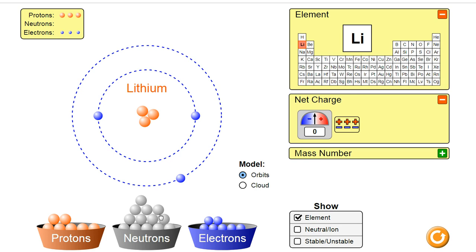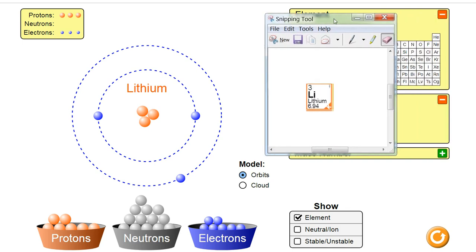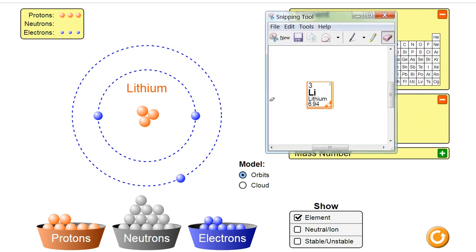Now, the other part are neutrons. And neutrons is the other particle that goes into the nucleus. And so if I take a look at, and again, this is a lithium, so if I bring this over, you can see that lithium